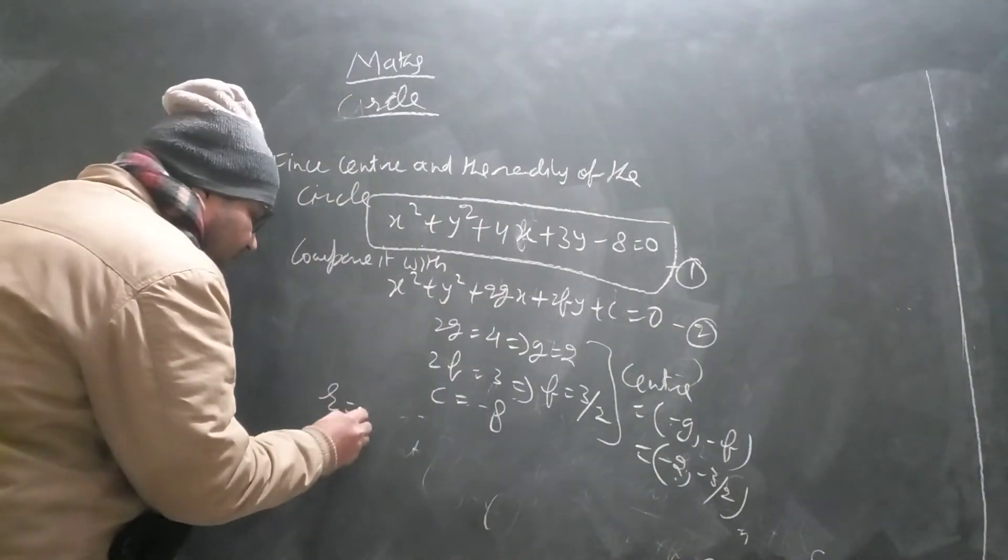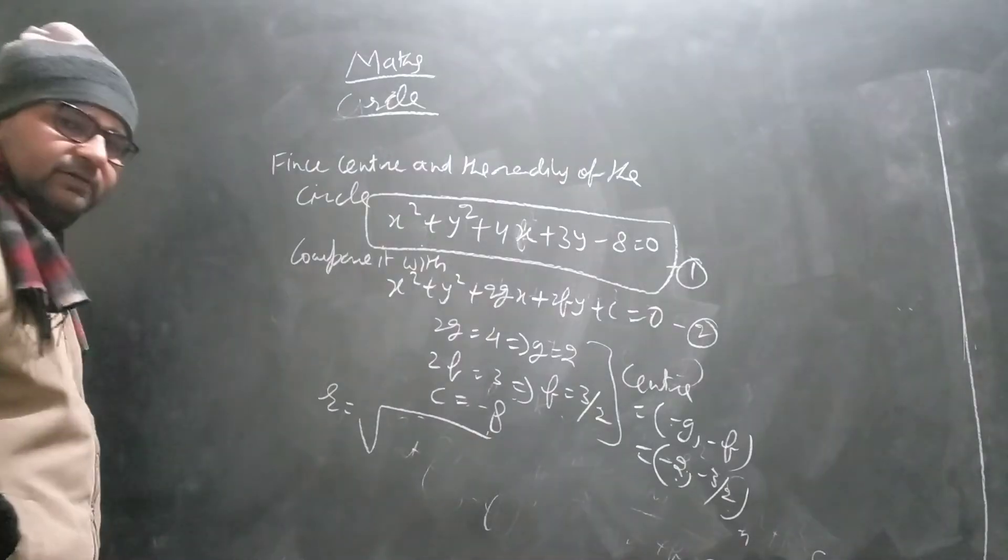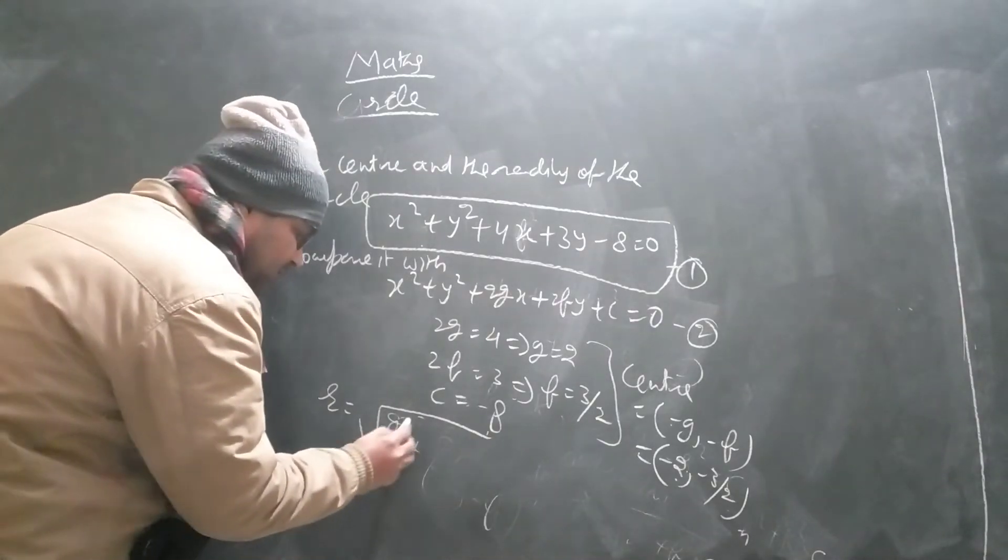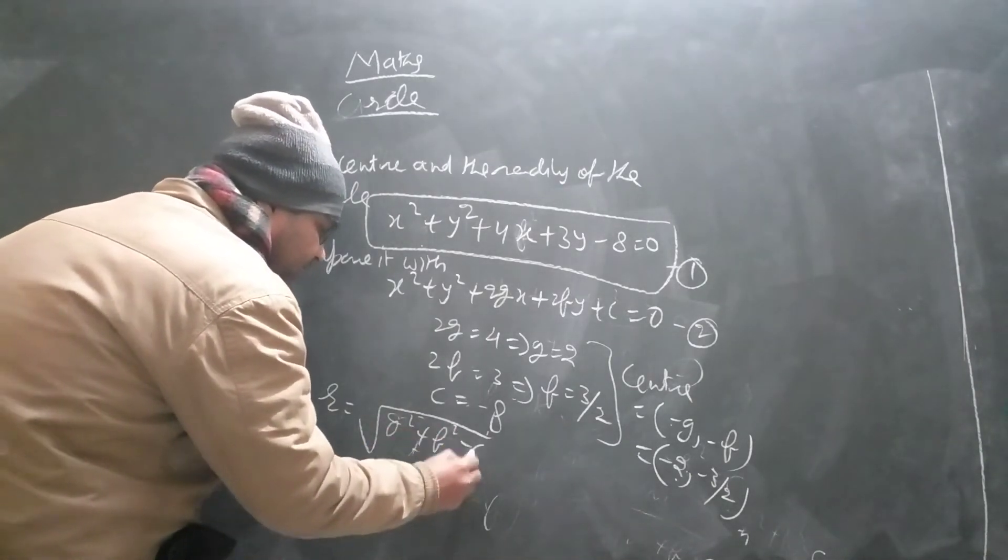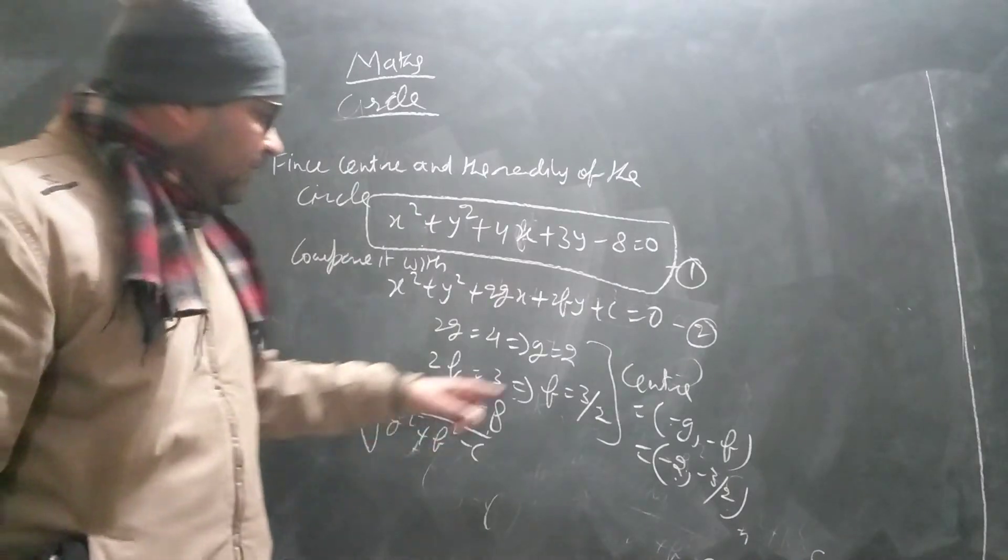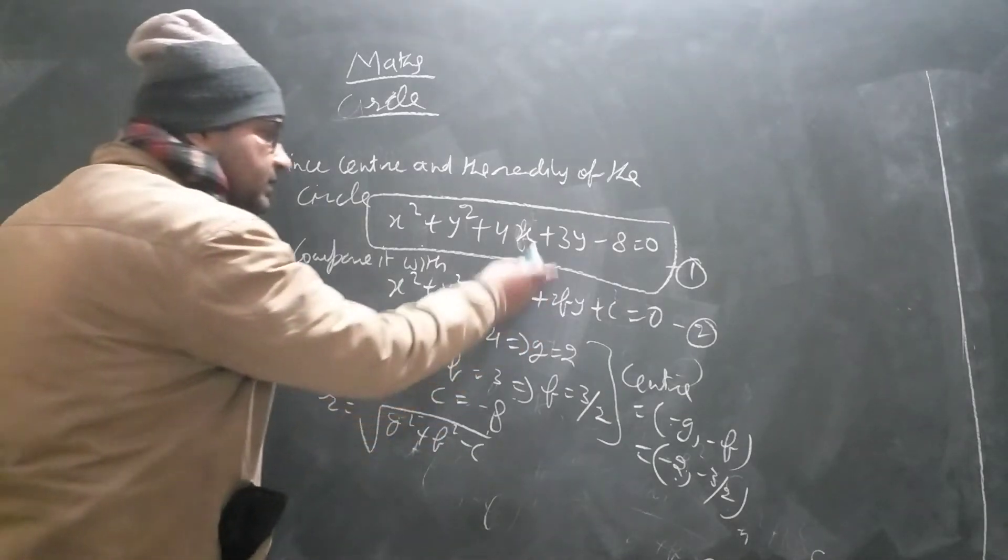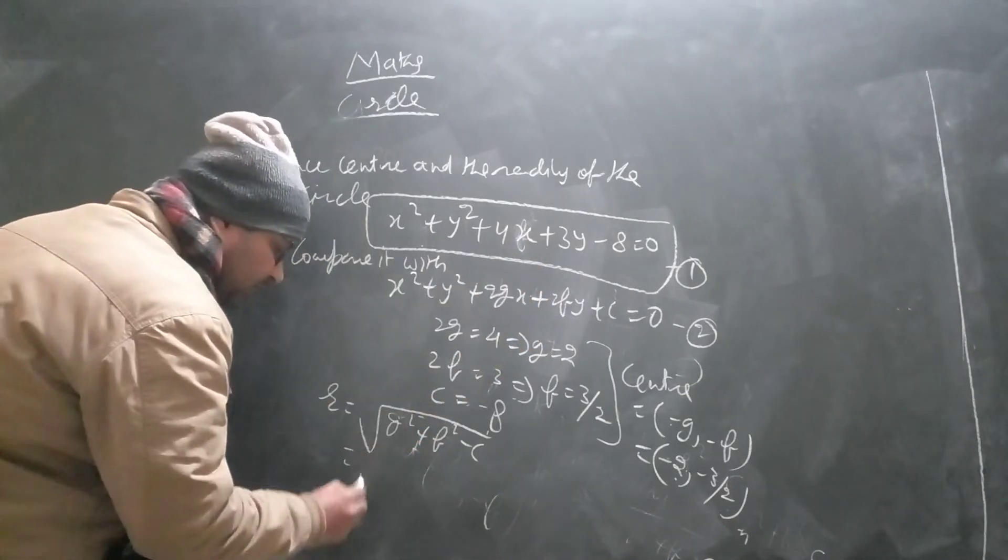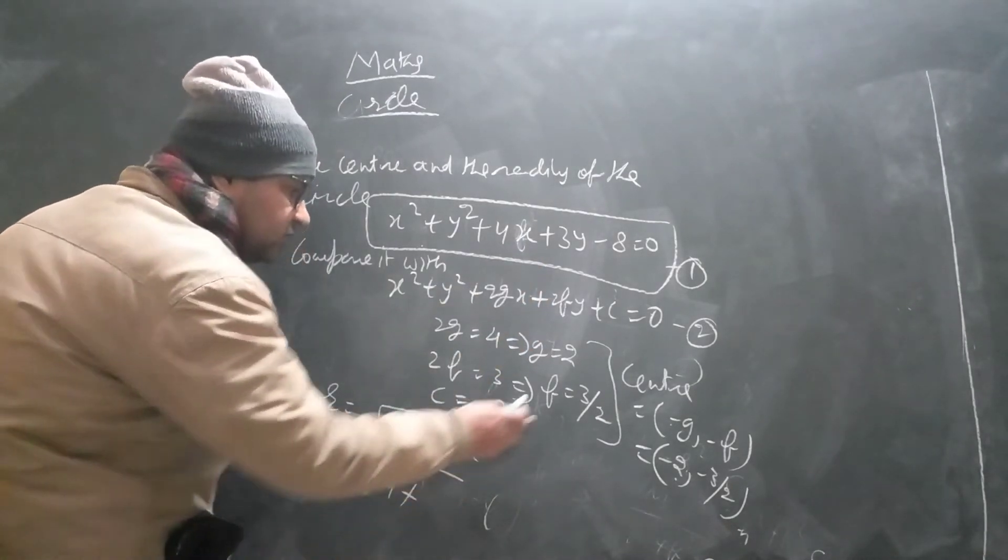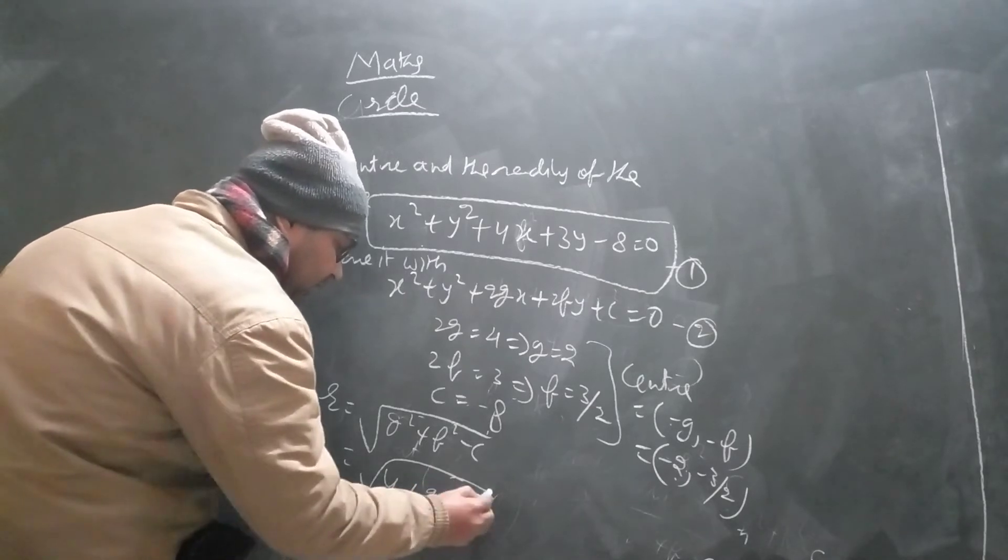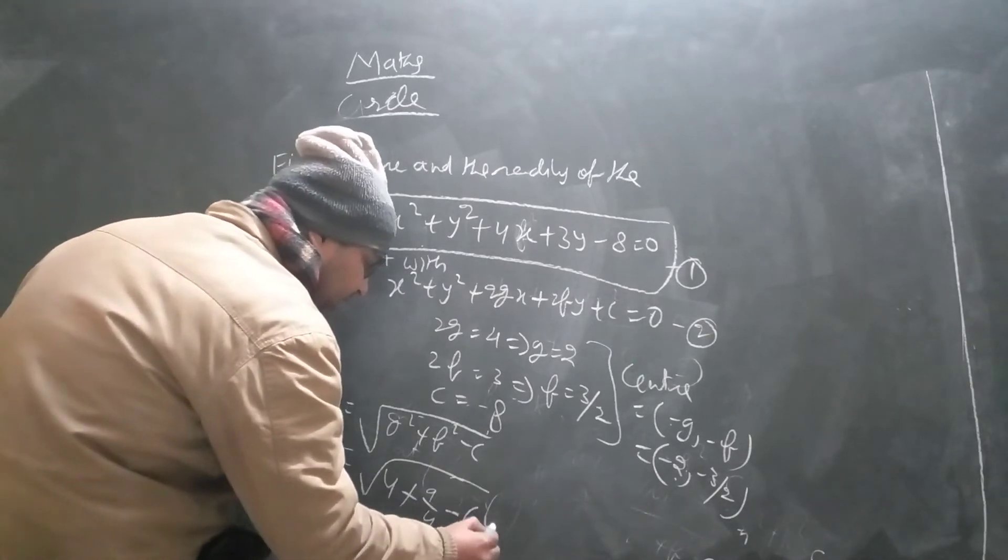And its radius R, now we have the formula, it is under root G square plus F square minus C. And we have found the value of G and F after making comparison. So G square, which means 4, F square, which means 9 by 4, and minus C is already minus 8, so...